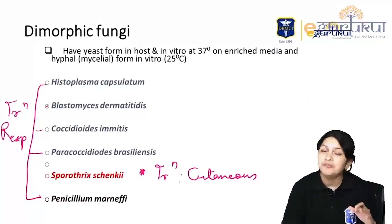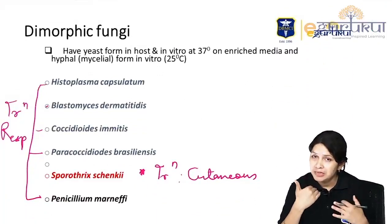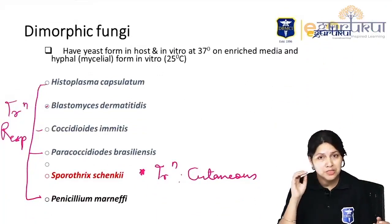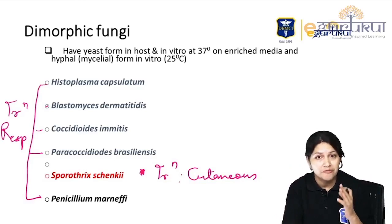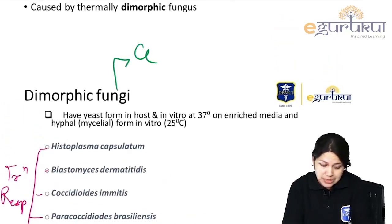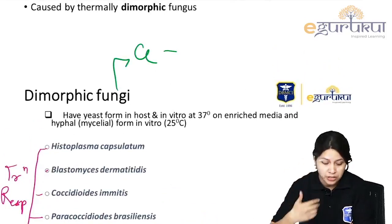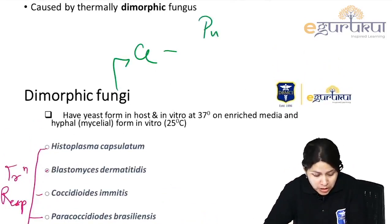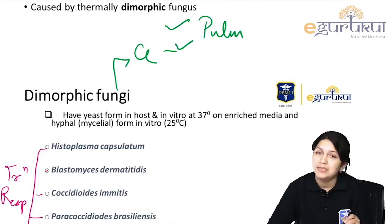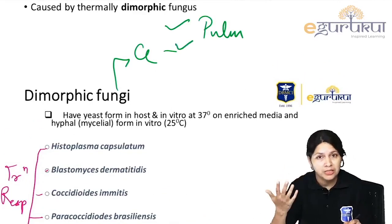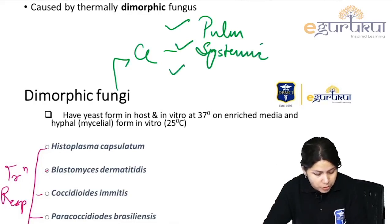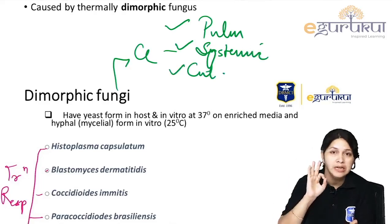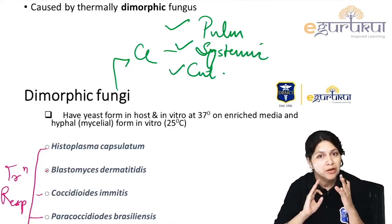Most dimorphic fungi are acquired by inhalation, except Sporothrix, which is acquired by traumatic implantation and the lesion is seen along the lymphatics. Because the route is mostly inhalation, the most common presentations are pulmonary, systemic — involving other organs like CNS and CVS — and cutaneous manifestations.